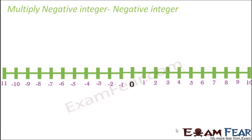Now let us see how to multiply a negative integer with a negative integer. Let us find the value of minus 2 multiplied by minus 3. When we say minus 2 into 3, minus 2 is added 3 times. But minus 2 into minus 3 — does that mean minus 2 is added minus 3 times? In this case, it still means minus 2 is added 3 times, but the negative sign tells us we move in the opposite direction on the number line.